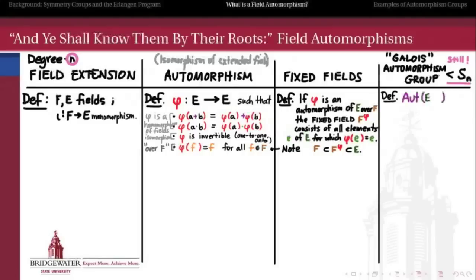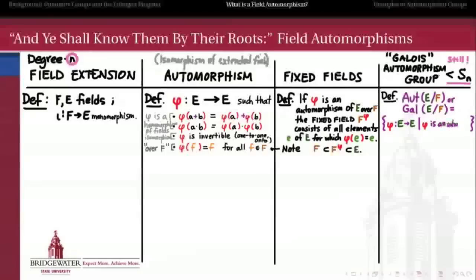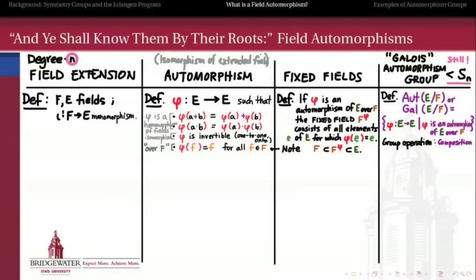Finally, the automorphism group of e over f — or the Galois group of e over f — is defined to be the set of all automorphisms of e over f. That's just a set, but it is a group under the operation of composition of two automorphisms. You can check that composing two automorphisms gives a result that is still an automorphism.